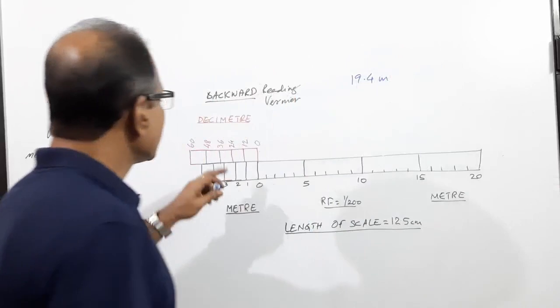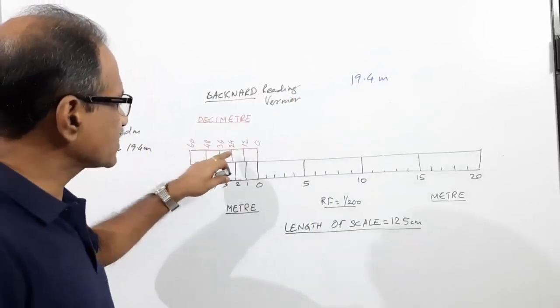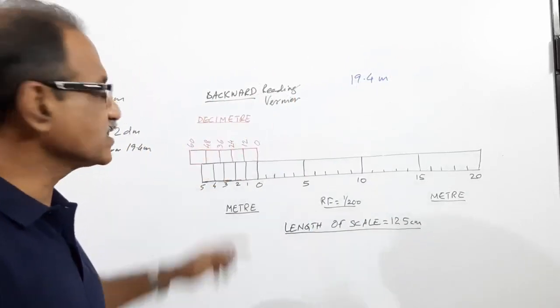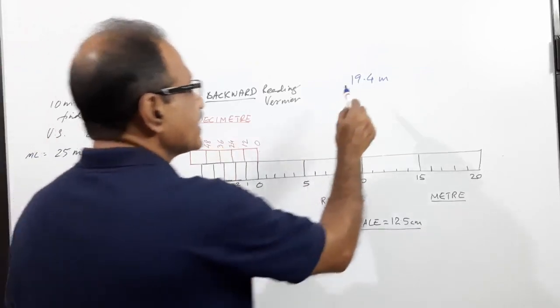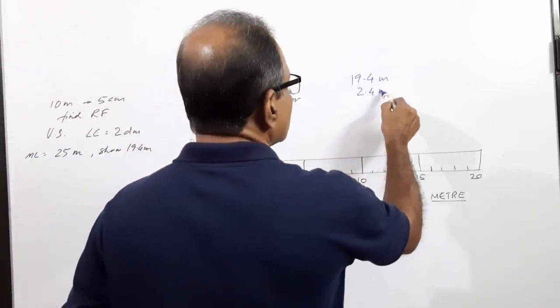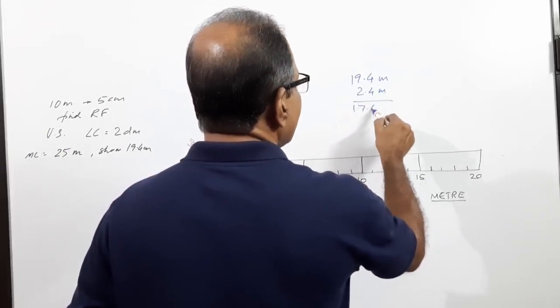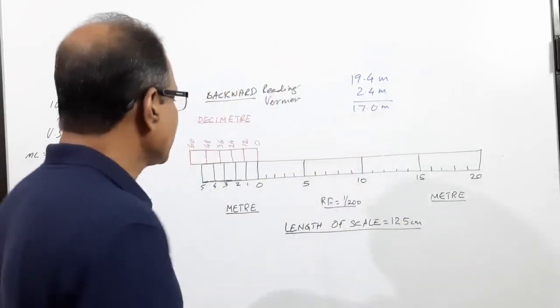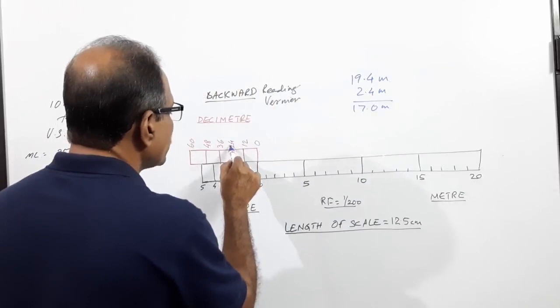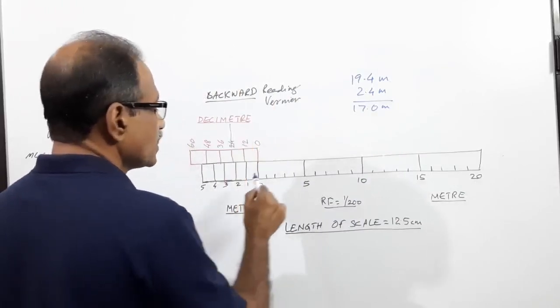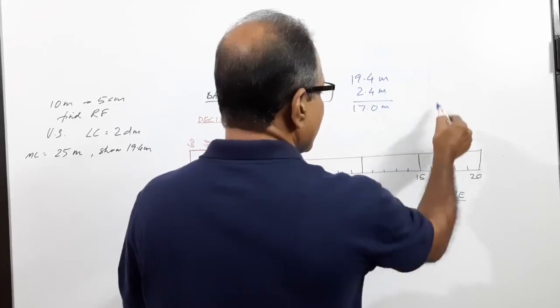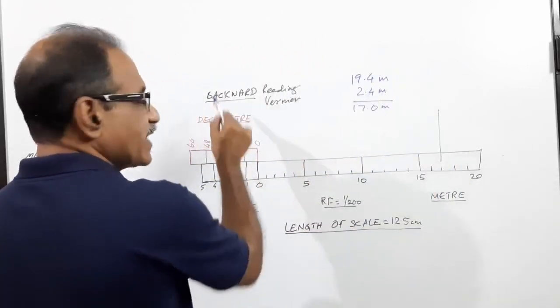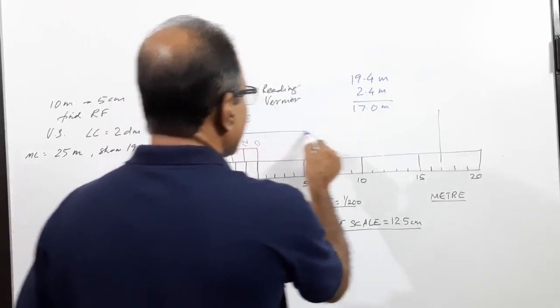There is only one division on the vernier scale with 2.4, that is 2.4 meters or 24 decimeters. Let us subtract 2.4 meters from this. The balance you get is 17 meters. Take 2.4 meters or 24 decimeters here.